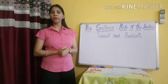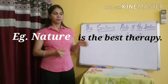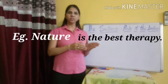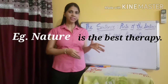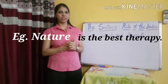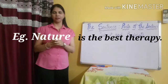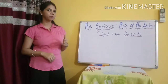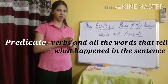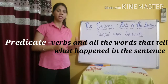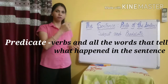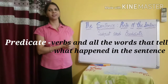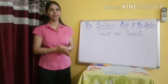With the help of an example, we can see: 'Nature is the best therapy.' Nature is the answer to us about what and who. So, nature is our subject. 'Is the best therapy' — this part is our second part, this is our predicate. Predicate consists of all the words including the verb which tell something about the subject — the verb and the rest of the words that we tell about the subject. So 'is the best therapy' is the predicate.